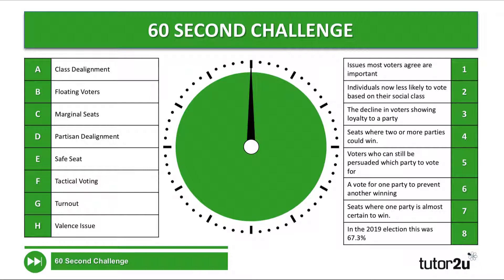Just before we get going, I thought we'd consider a few of the key terms relating to this topic. I've got a little challenge for you here. On the download handout, you could fill this in, or you could just do it on paper — put the numbers next to A, B, C, D, E, F, G and H and see if you can work out which of these short, abbreviated definitions links to which of these key terms. Okay, let's see how you get on. You've got 60 seconds.